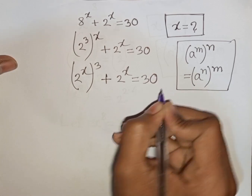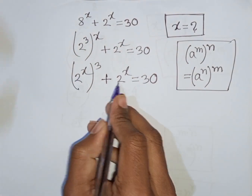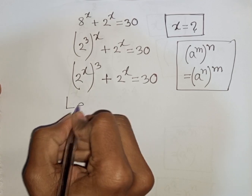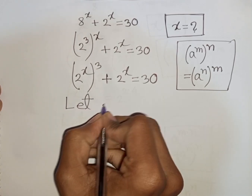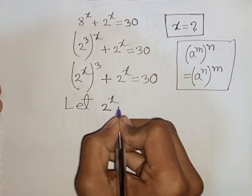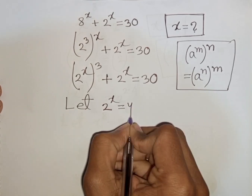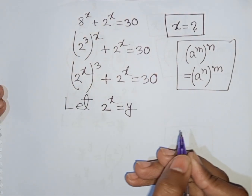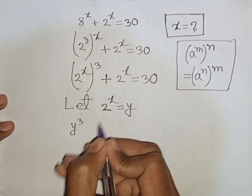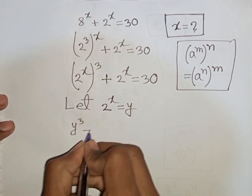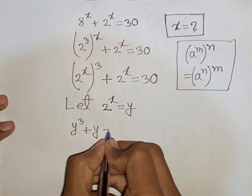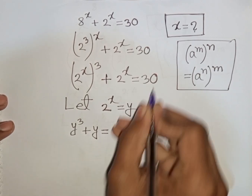Now we see 2 power x appears in both terms, so let 2 power x be substituted by y. So our equation will be y cube plus y is equal to 30.